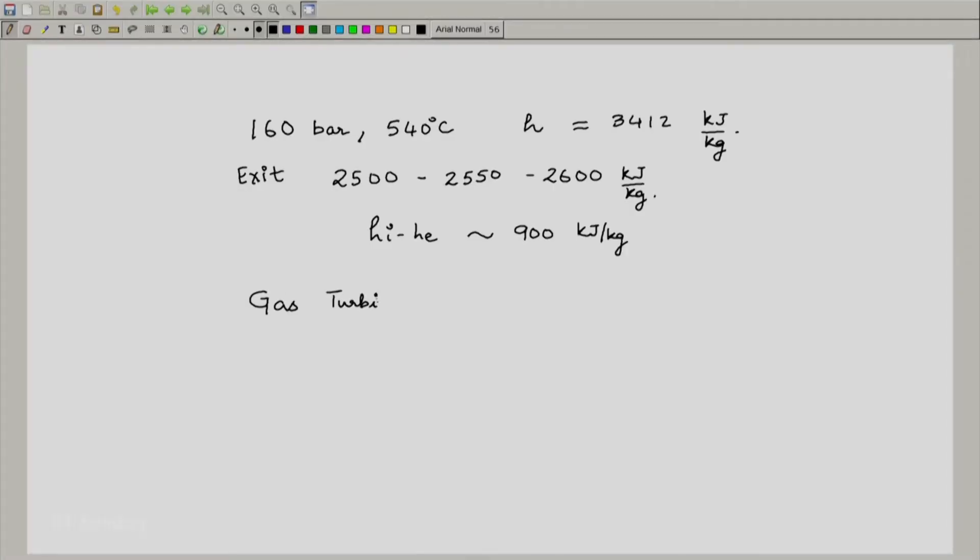If you look at gas turbines, the delta H can be calculated using C_p delta T, and m dot C_p delta T would give you the inlet enthalpy. For a gas turbine operating with air, C_p for air is around 1 kilojoule per kg. Delta T that you get in gas turbines could be anywhere between 200 to 500 degree centigrade.